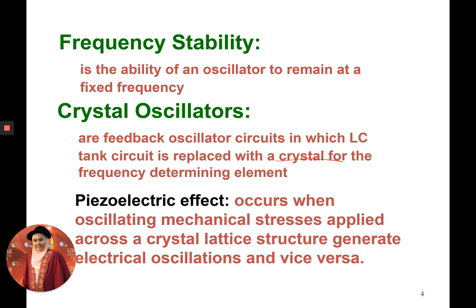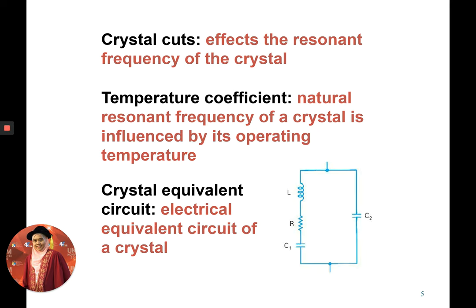In order for the crystal oscillator to give us a high and stable fixed frequency, there are some reasons or factors involved. First is the crystal cut — depending on the crystal cut, it will affect the resonant frequency of the crystal. More cuts on the crystal will give more resonance frequency and produce a higher frequency. Another factor is the temperature of the crystal itself — the natural resonant frequency of a crystal is influenced by its operating temperature.